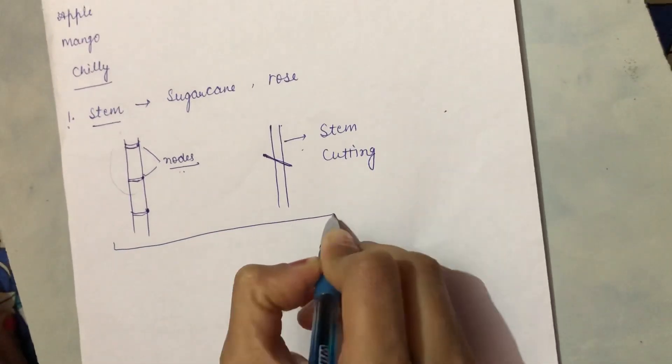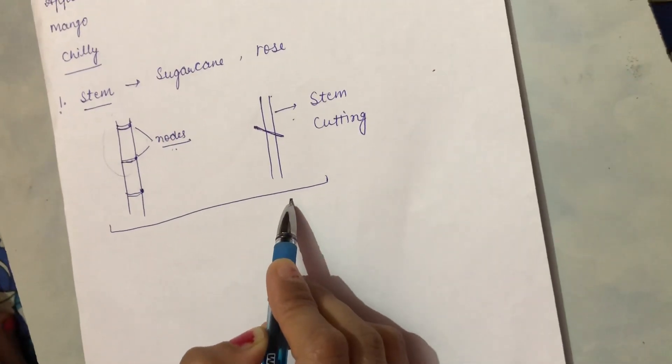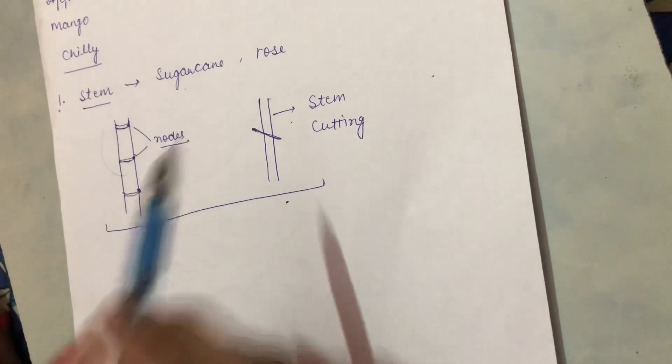And this piece is called stem cutting. And these can be grown into new plants only when these will get favorable conditions. These are the general examples.